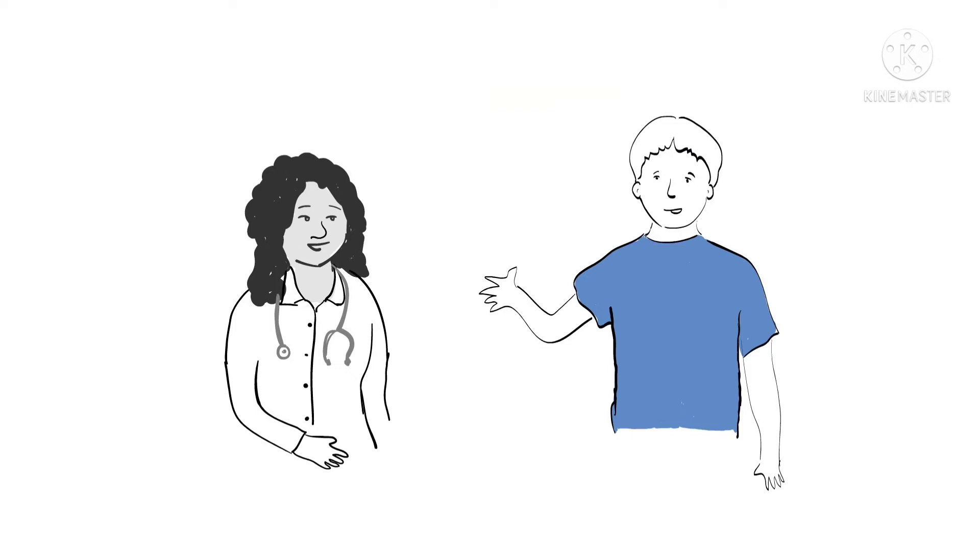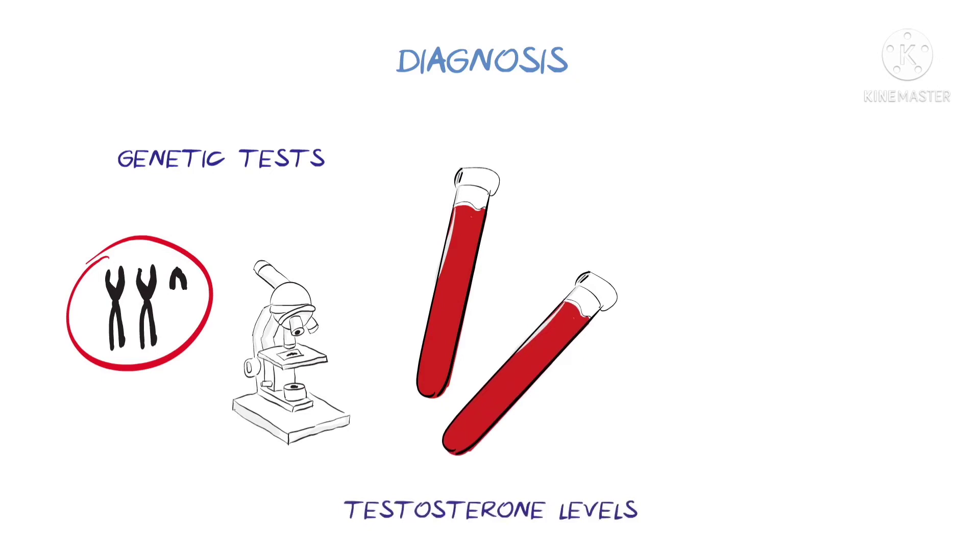Diagnosis is confirmed by a blood test, which checks for the extra chromosome through a genetic test. For adults, other tests can also be helpful, such as checking blood testosterone levels and fertility tests such as sperm count.